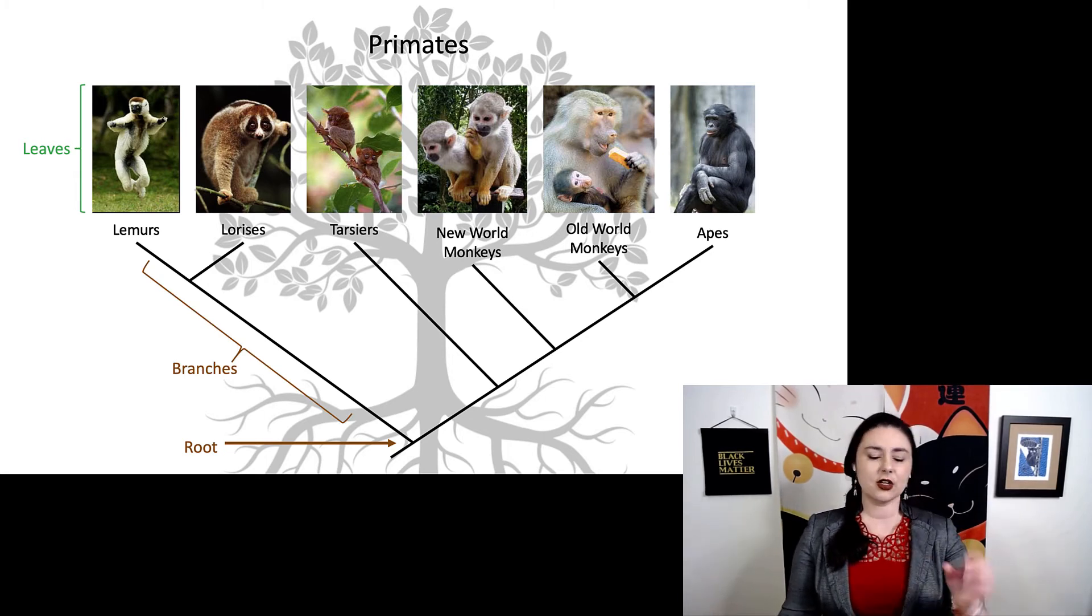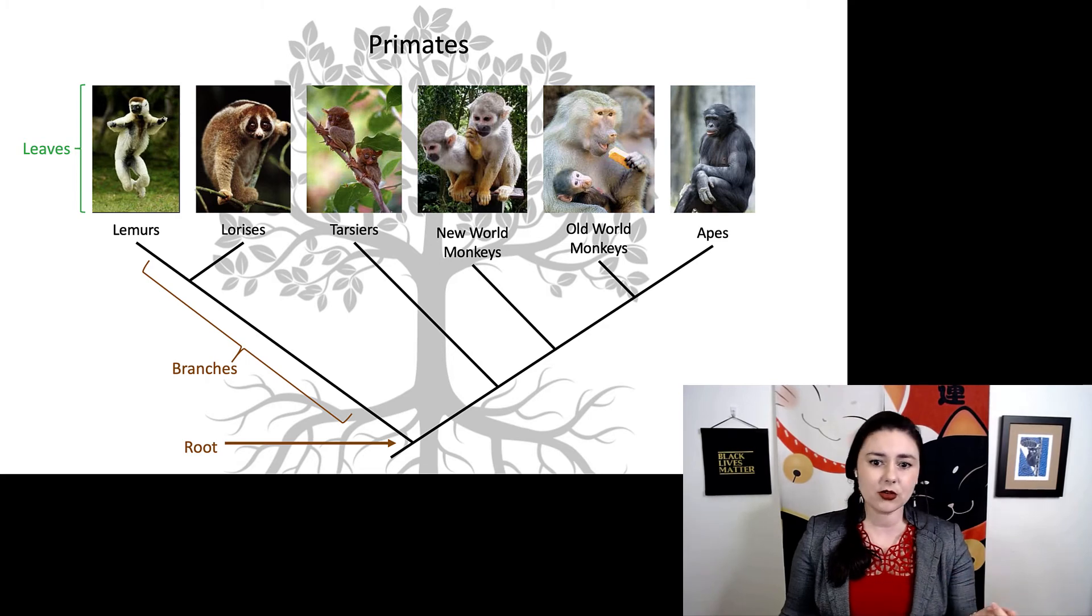And you can see, there's a hypothetical common ancestor for lemurs and lorises, and of course one for tarsiers and all other haplorines there.